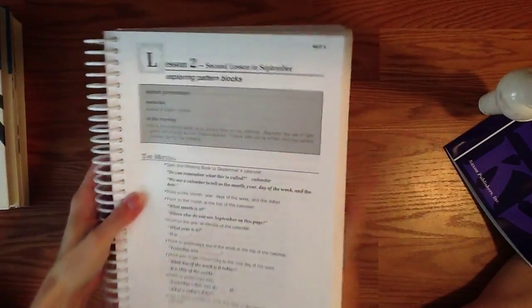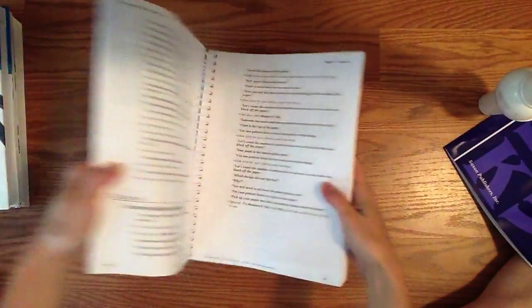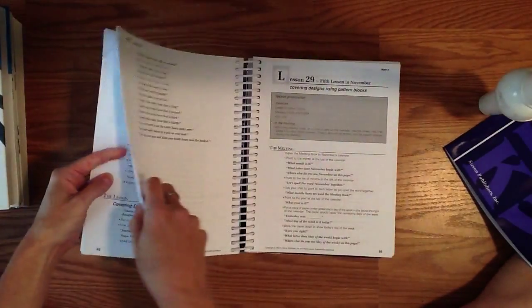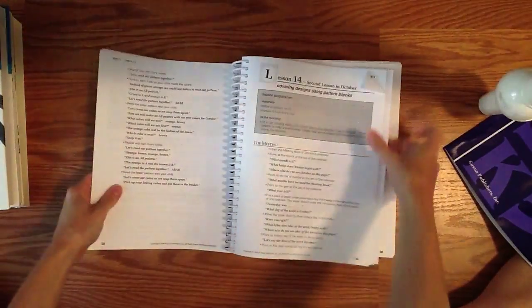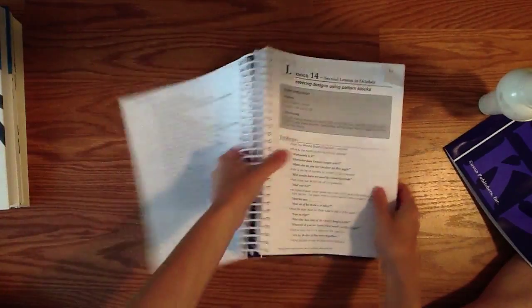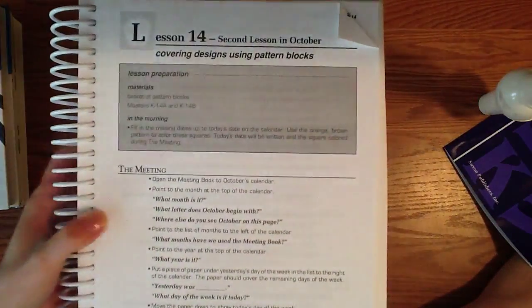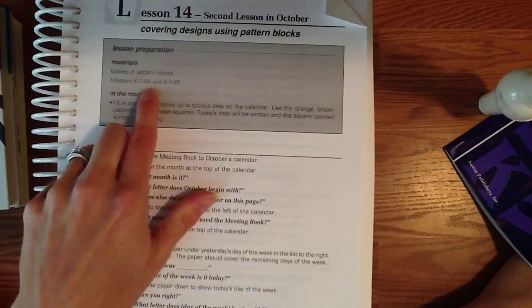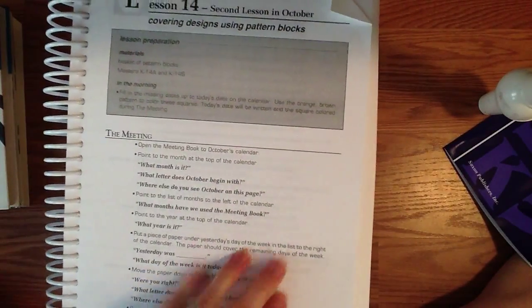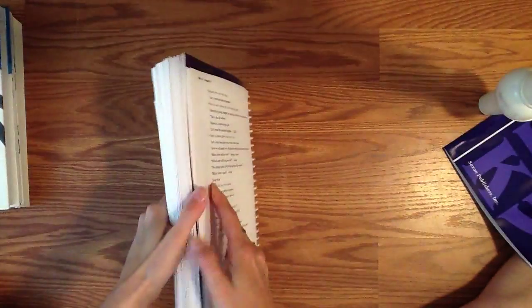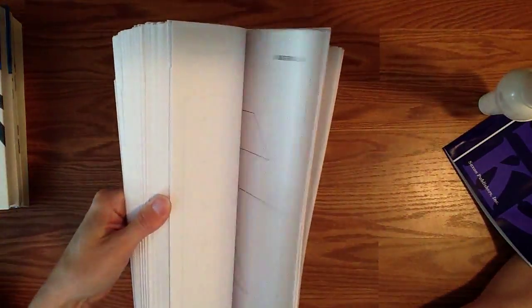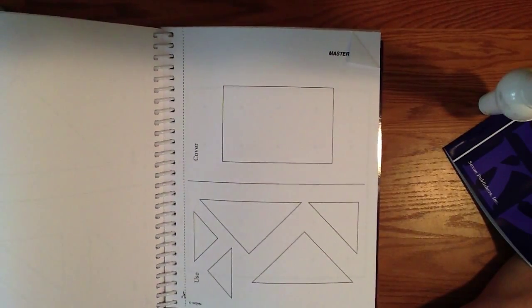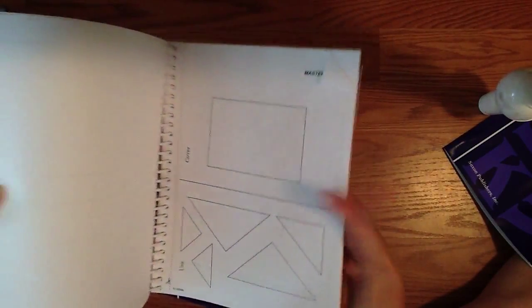And that is how it is formatted throughout the whole book here. You will see some references to the masters - on this one it references masters K14A and K14B. You can find all of those things at the back of the book and it's just going to be either worksheets or shapes or different things you need to cut out and use for that lesson.